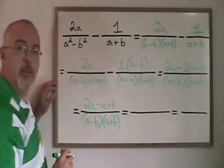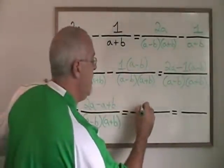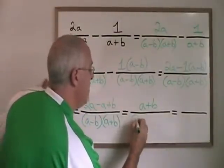And we can simplify it further. 2a minus a is a. So this becomes a plus b over the common denominator.